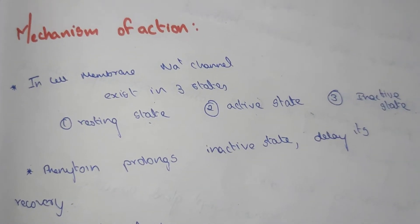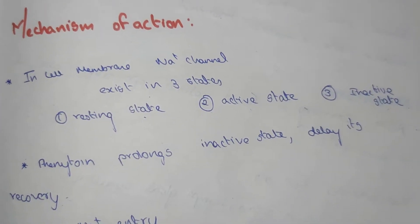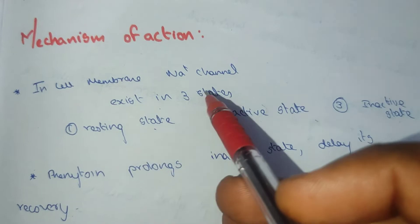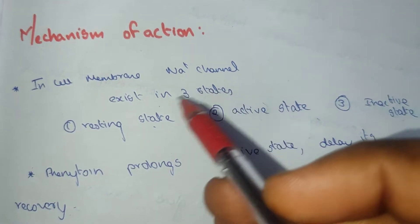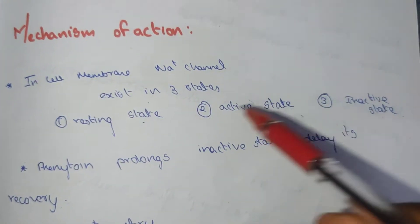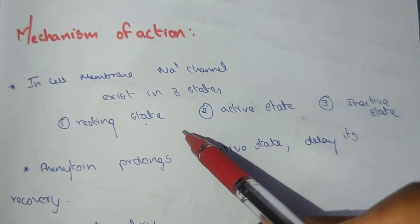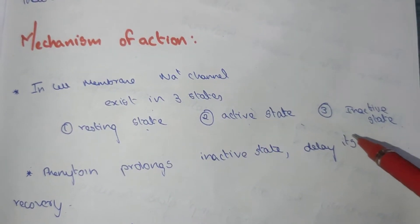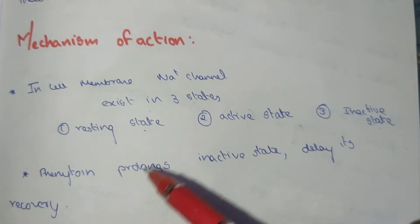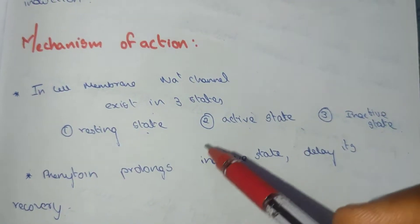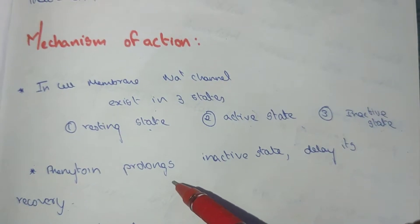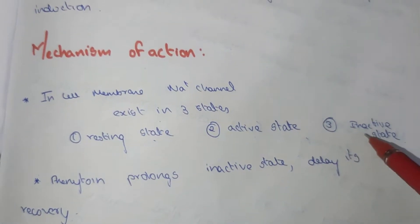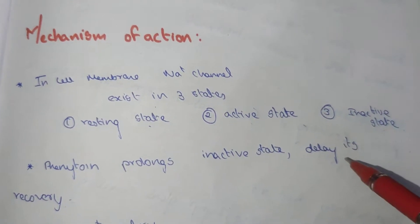The mechanism of action of phenytoin sodium: in the cell membrane, the Na+ channel exists in three states — resting state, active state, and inactive state. Phenytoin sodium prolongs the inactive state.